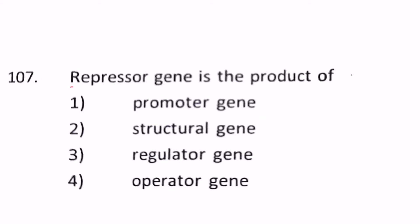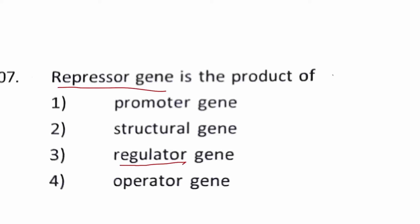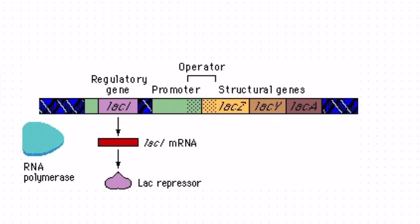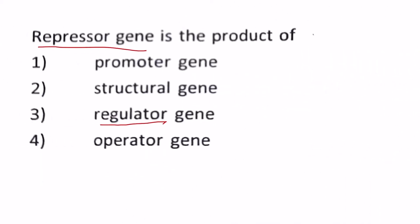Next question: repressor gene is the product of 1) promoter gene, 2) structural gene, 3) regulator gene, 4) operator gene. First, repressor gene obviously means a gene which is responsible for repressing a particular expression. Out of all the genes given in the option, regulator gene is the one which is responsible for regulating the particular expressions in a gene. Therefore, let's take a reference. If we take this lac operon gene as an example, the regulatory gene is present in the very beginning where our lac repressor gene will be attacking the mRNA which will be responsible for repressing the mRNA expression. Therefore regulatory gene will be producing the repressor gene. Our answer will be number 3.